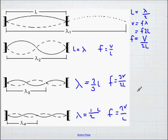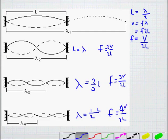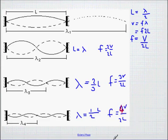Keeping a common denominator of 2L: the frequencies are V/2L, 2V/2L, 3V/2L, and 4V/2L. You can see we're going up in multiples — 1, 2, 3, 4 times the fundamental frequency — which matches what we saw with the man on the ground moving the spring.